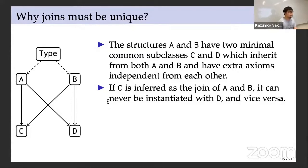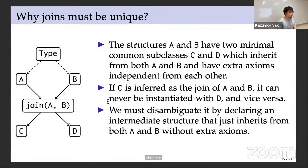Here is a diagram of a minimal hierarchy with a non-unique join: structures A and B have two minimal common subclasses C and D, which both inherit from A and B but have extra axioms independent from each other, so C and D do not inherit from each other. If C is inferred as the join of A and B it can never be instantiated with D. We must disambiguate by declaring an intermediate structure that inherits from both A and B without extra axioms, so that both C and D inherit from this intermediate structure.